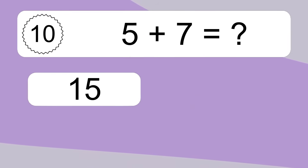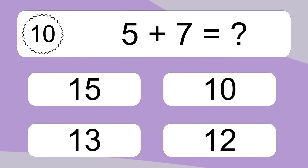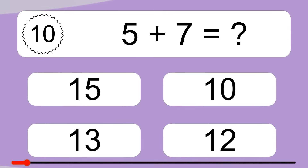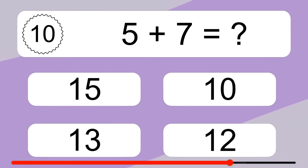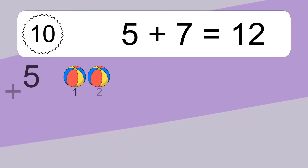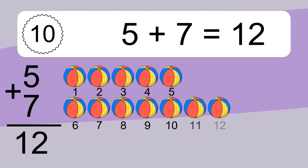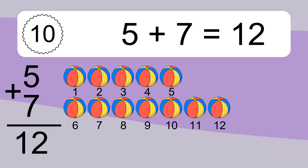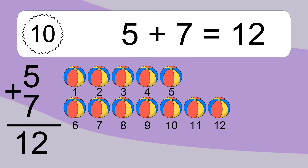5 plus 7 equals what? 5 plus 7 equals 12. Let's count it: 1, 2, 3, 4, 5, 6, 7, 8, 9, 10, 11, 12.